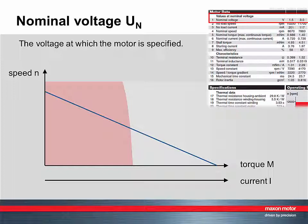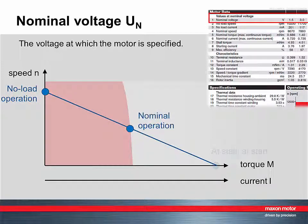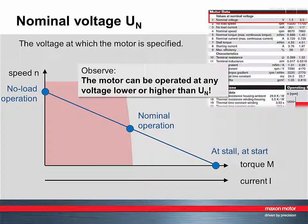In the Maxon catalog, there are three motor operating points given at this particular voltage. However, keep in mind that the motor can be operated at any voltage. The nominal voltage is just the voltage at which the motor data are specified.